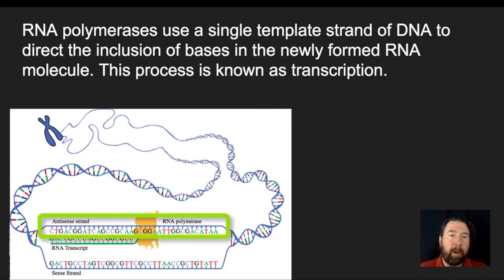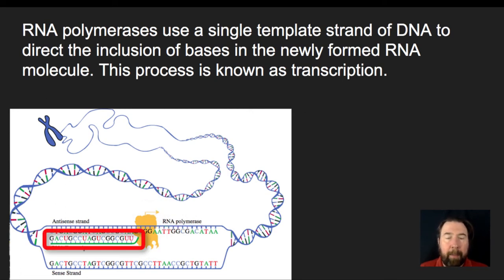which is going to be complementary to our template. And our antisense strand is going to then have an RNA polymerase bind to it and proceed along that in a direction where we're going to add complementary RNA molecules to build our mRNA.